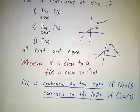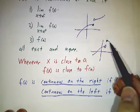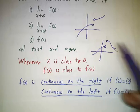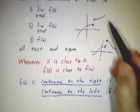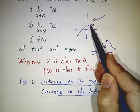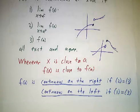Continuous on the right means if increasing x slightly only changes the value of the function slightly, and you don't worry about what's happening on the left. Continuous on the left if decreasing x slightly doesn't change it much, and you don't worry about what happens on the other side.